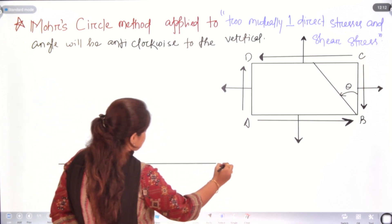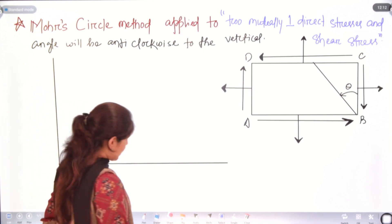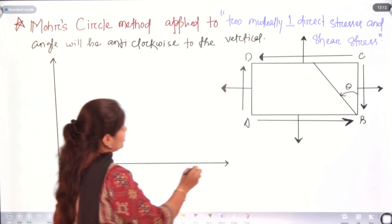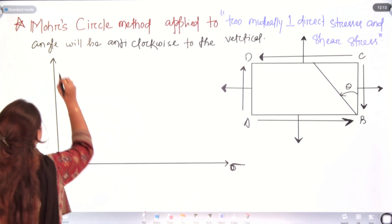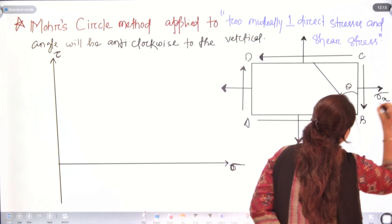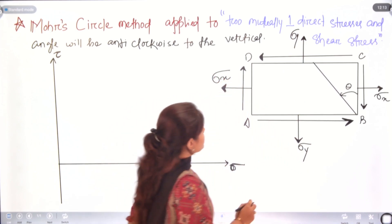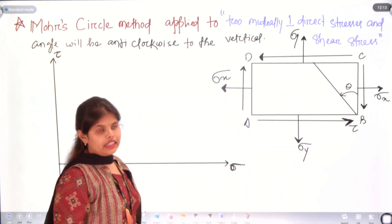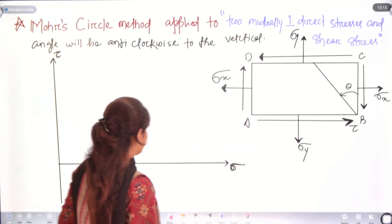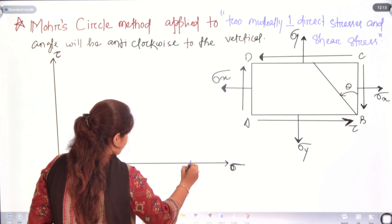First, as always, we will take the x-axis and y-axis. We know the x-axis will represent direct stress or normal stress, and the y-axis will represent shear stress. We have sigma_x in the x-direction and sigma_y in the y-direction. We will draw sigma_x and sigma_y on these axes, with sigma_x plotted from the origin point.